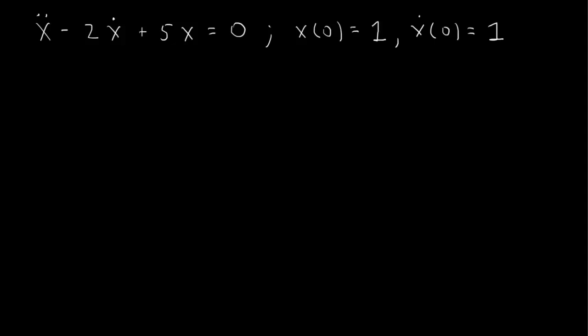So this is a second order linear constant coefficient differential equation, homogeneous, so to solve this we try x of t equals e to the rt. Substitute in and cancel the common e to the rt, so we get the characteristic equation r squared minus 2r plus 5 equals 0.